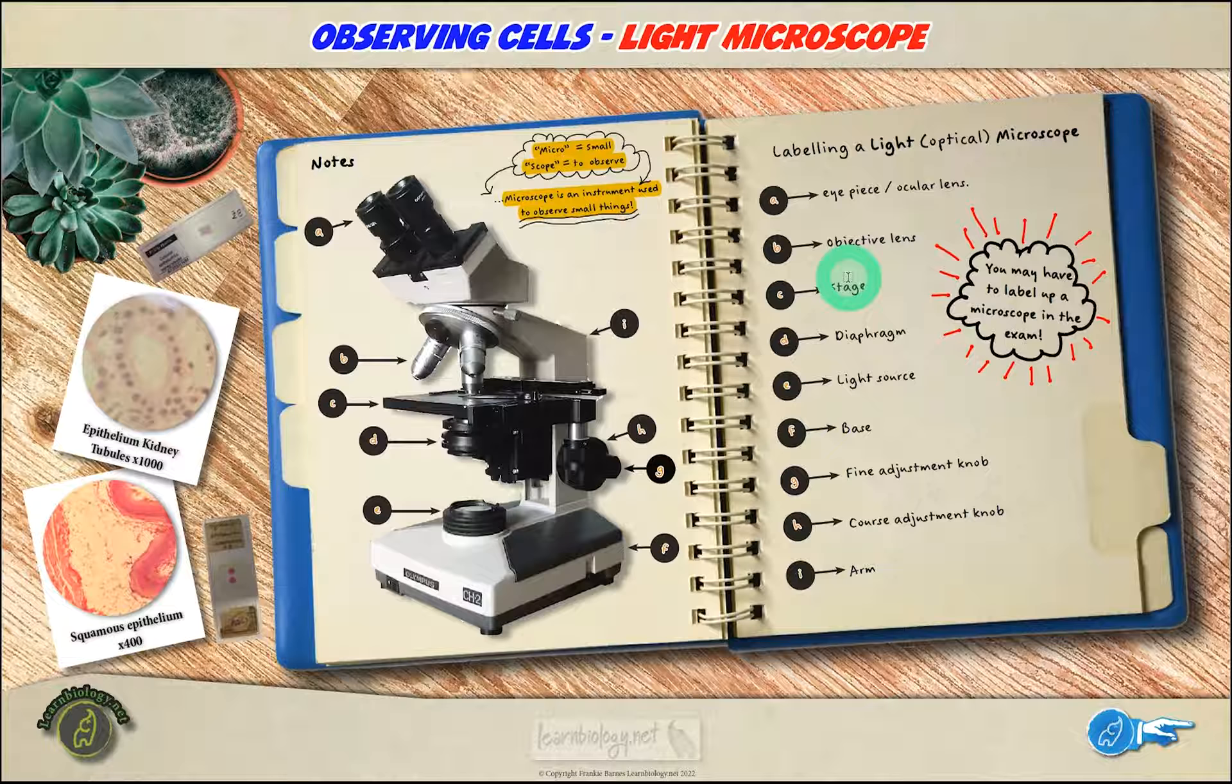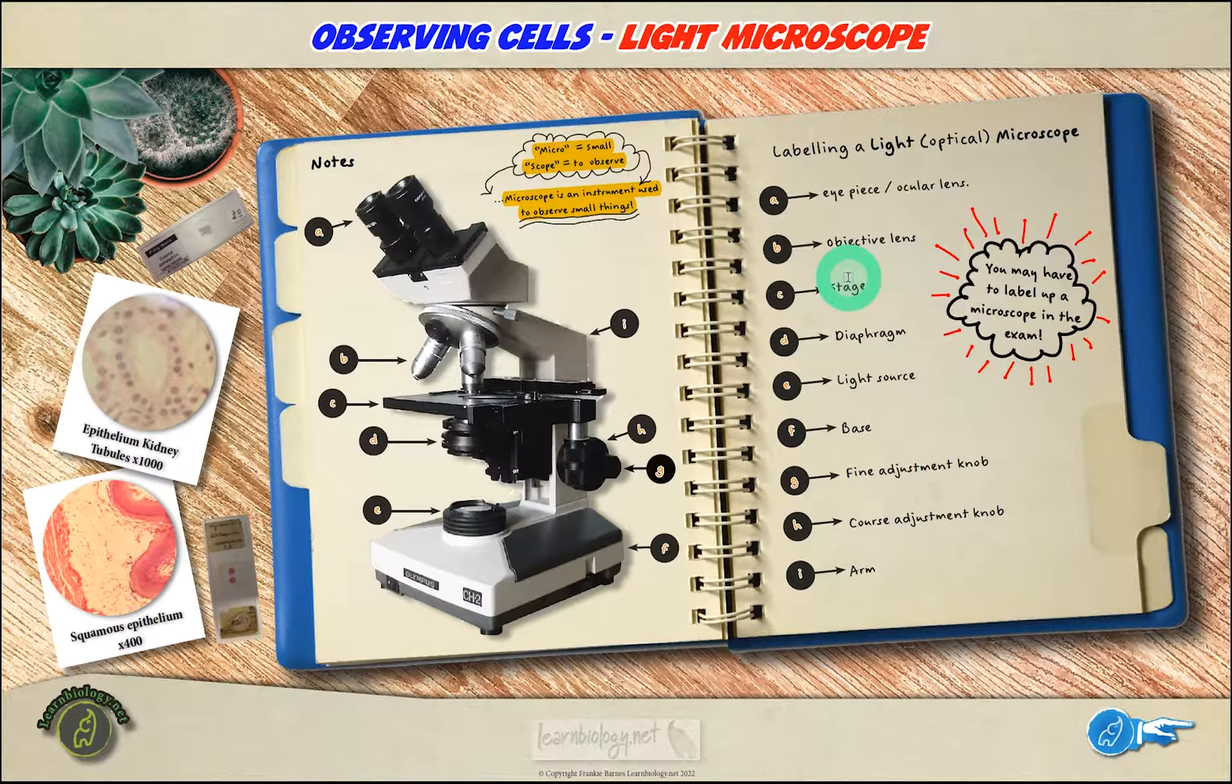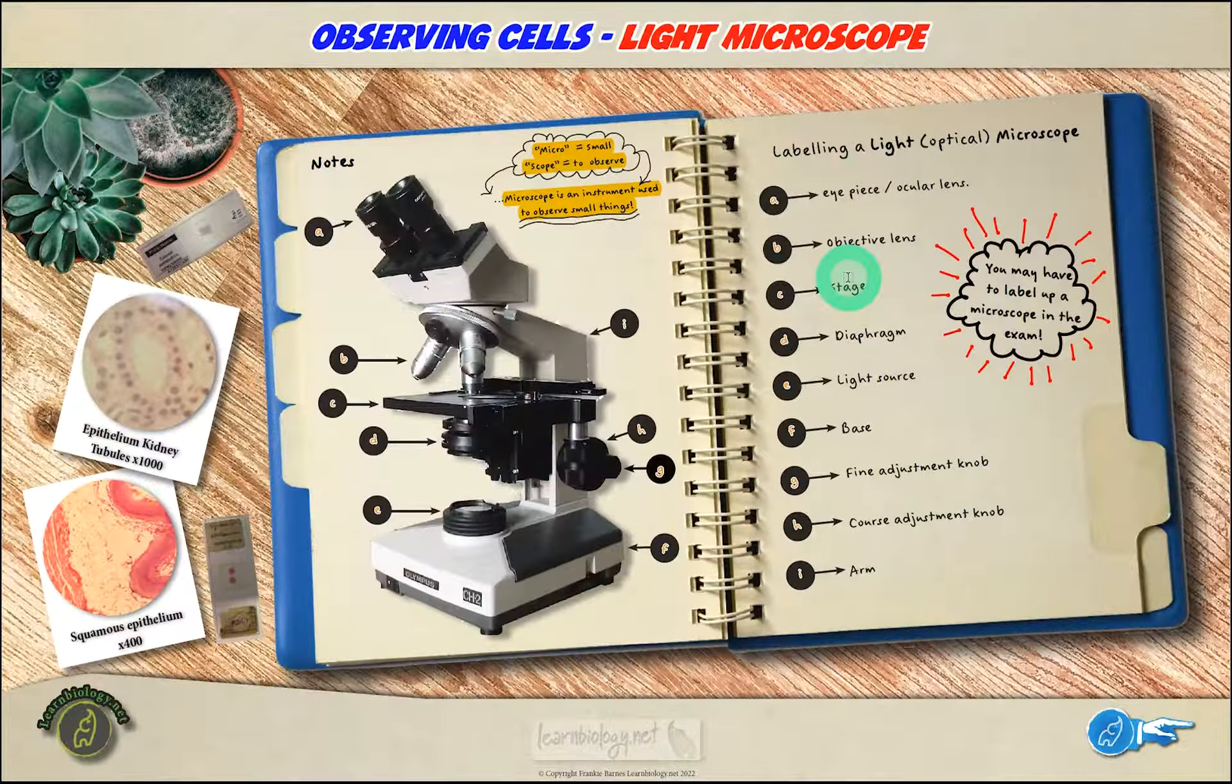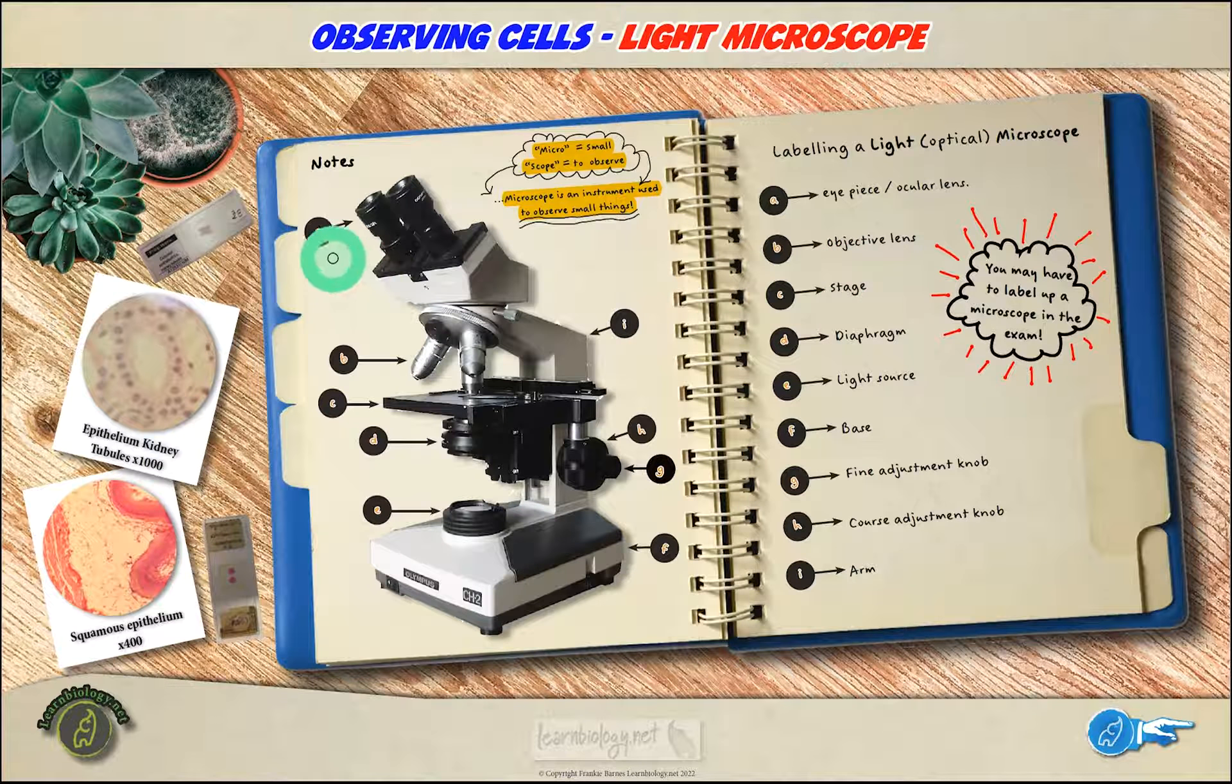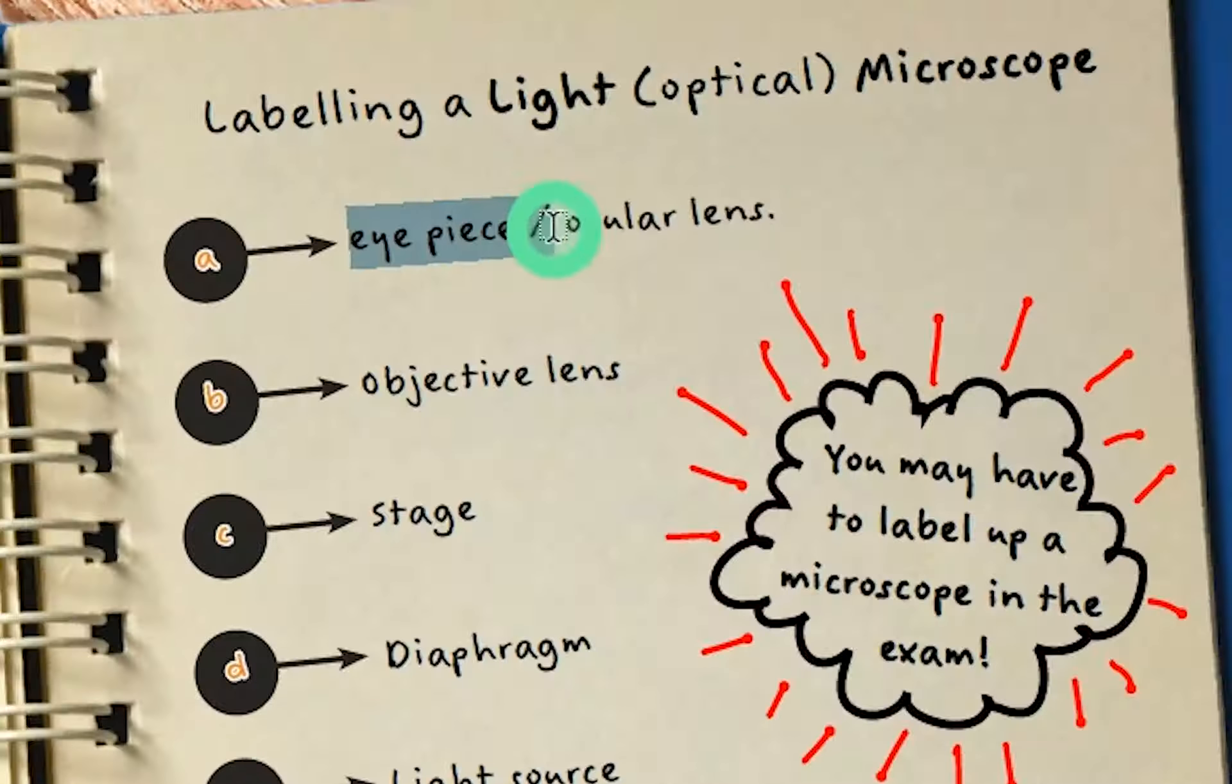Now you'll be more familiar with what is known as a light microscope or an optical microscope, and this is a piece of lab equipment that you should be quite familiar with. It goes without saying that you may have to label it up, or at the very least you'll be expected to know the parts of it even in the exam. So I'll quickly list the parts that you're expected to know. At A here we have the eyepiece or the ocular lens, and of course you look through these to see the sample.